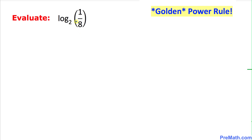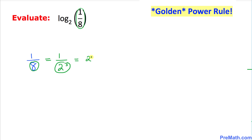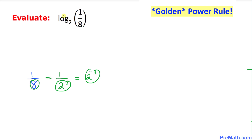Here is our next example: we evaluate log of 1/8 with base 2. Let's focus on 1/8 — 8 could be written as 2 power 3, so 1/8 is 1 over 2 power 3. Moving 2 power 3 to the top gives 2 power negative 3. So this expression becomes log of 2 power negative 3 with base 2.